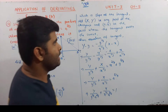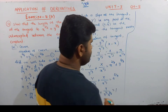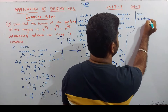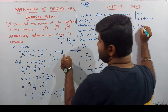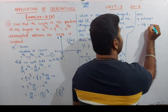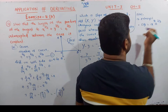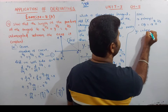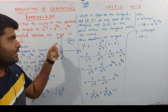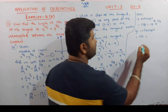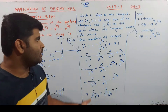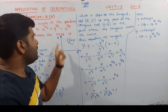This is the intercept form of the line. The x-intercept OA = x^(1/3) · a^(2/3), and the y-intercept OB = y^(1/3) · a^(2/3). Now, AB = √(OA² + OB²).